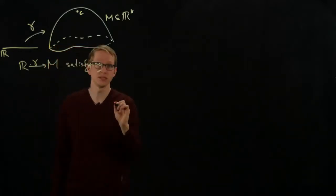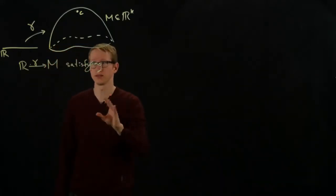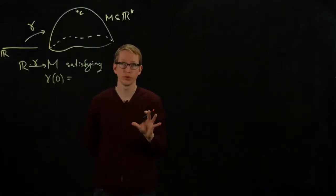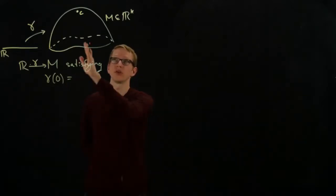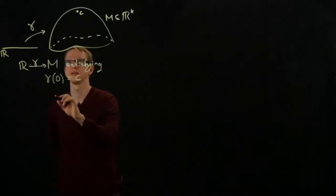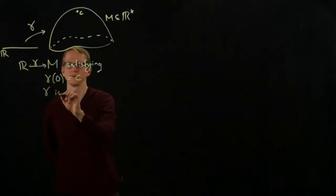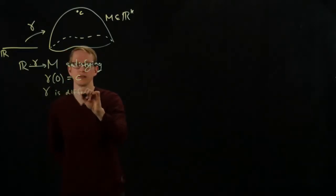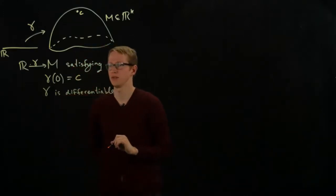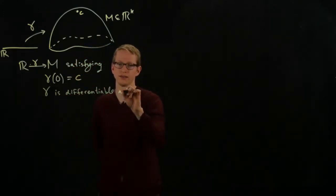First of all, it has to be differentiable for any of this to make sense. You'll see in a moment why, satisfying the condition that at the initial point in time, gamma of 0 is exactly the point C, and gamma is differentiable. Let me just write that out explicitly. And in fact, all we really need is that gamma is differentiable at 0.